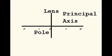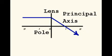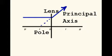A light ray that passes through the pole continues undeflected. A light ray that travels parallel to the principal axis will pass through or will appear to have passed through a focus.